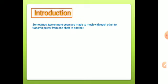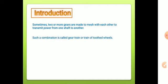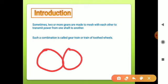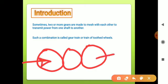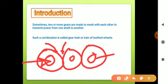Sometimes two or more gears are made to mesh with each other to transmit power from one shaft to another. Two or more gears are used to transfer motion from one shaft to another shaft. Such a combination is called a gear train or train of toothed wheels. For example, this gear is on shaft one, this gear on shaft two, and this gear on shaft three, rotating in clockwise, anticlockwise, and clockwise directions respectively.